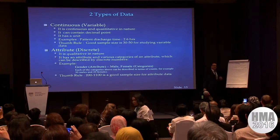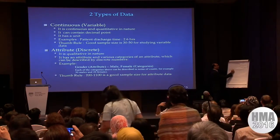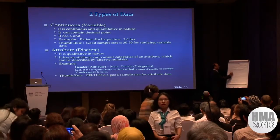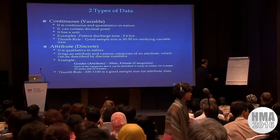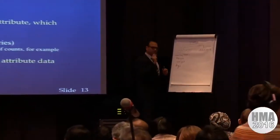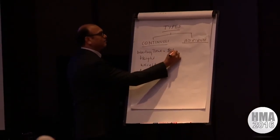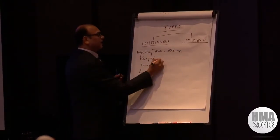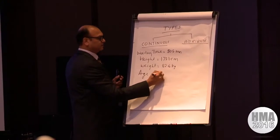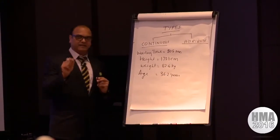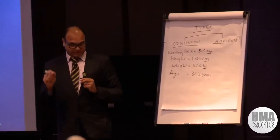Can you give some examples? Continuous data is quantitative data. For example, waiting time, height, weight, age. If you carefully notice, it will have a number — say 40 or 80.5 minutes, 173.1 centimeters, 82.6 kgs, and age 36.2 years. The similarities are: it can take a decimal point and it always has a unit. So this is known as continuous data.